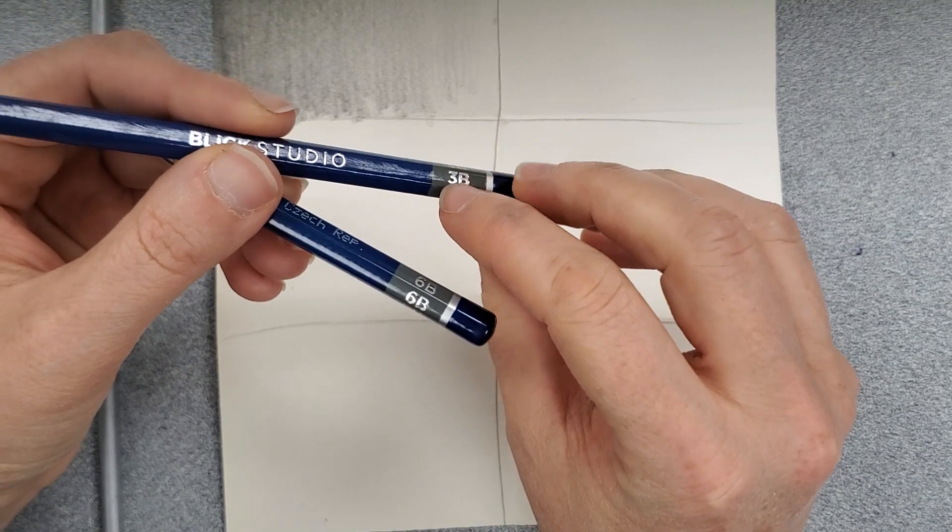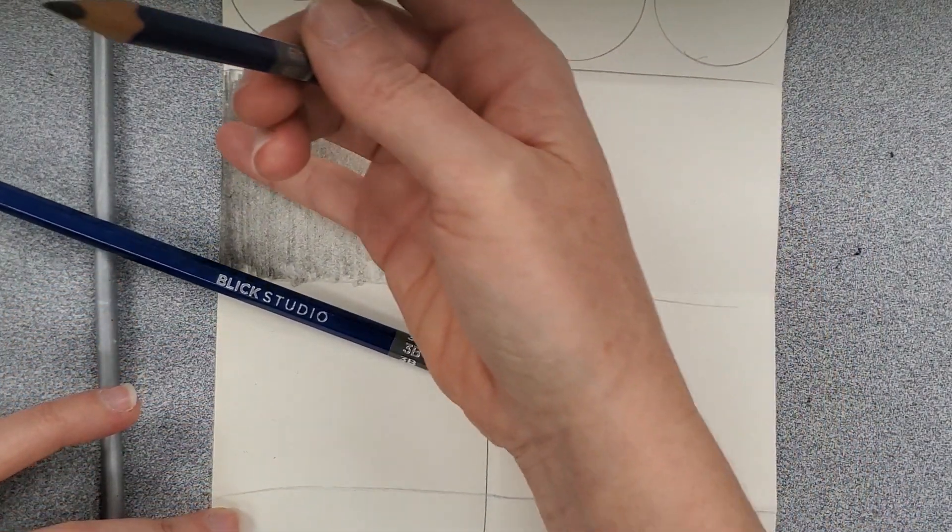From there I am going to locate with my graphite two other types. You can either have a three or four B. So graphite has numbers and letters associated with it. For your second box you can either use a three or four B, for the last box you're going to use a five or a six B. Now what this means is the B stands for the softer graphite, and the higher the number the softer the graphite and the darker the line. So higher the number, softer the graphite, darker the line.